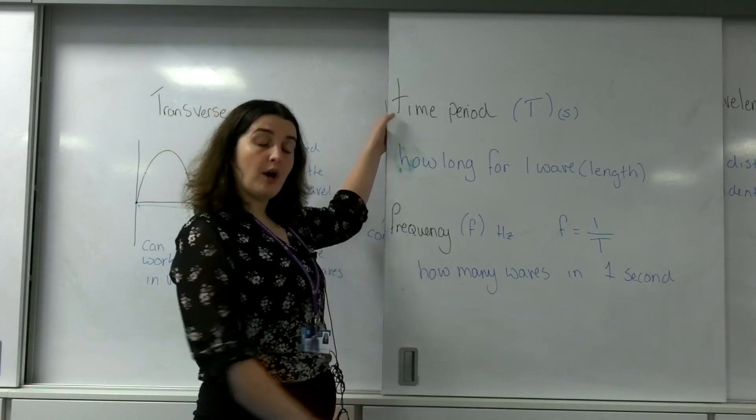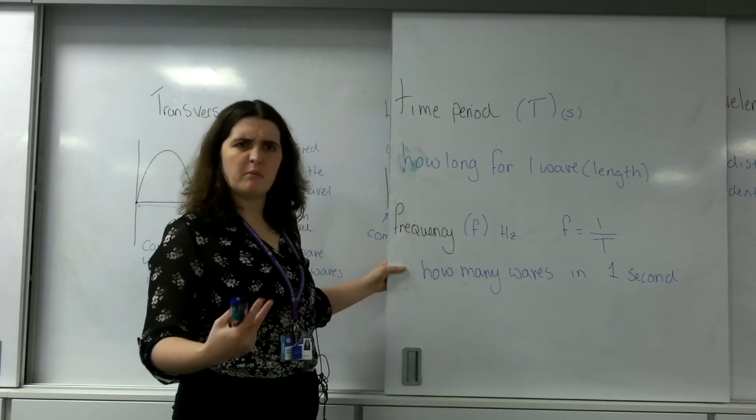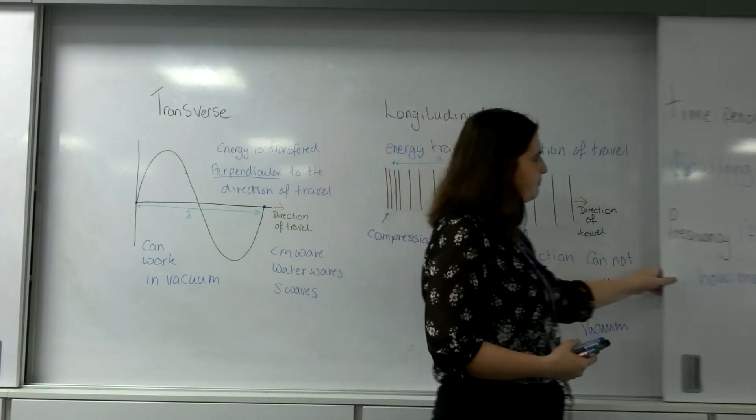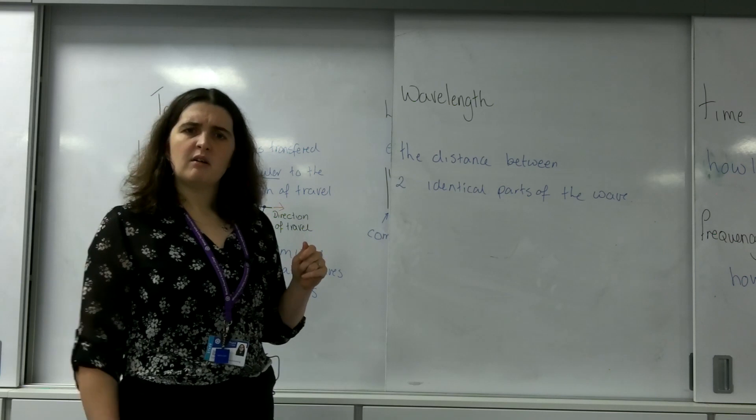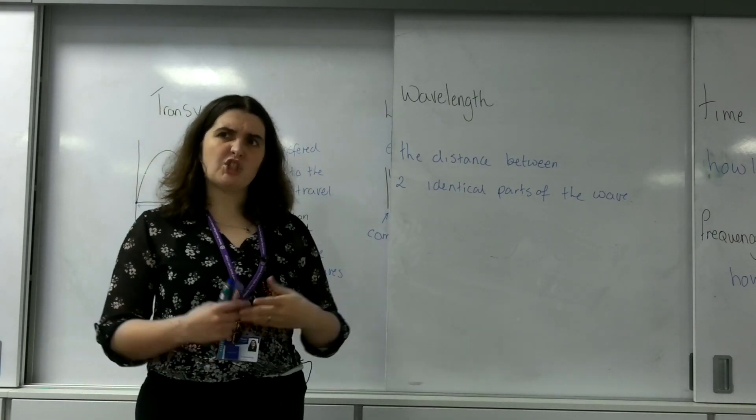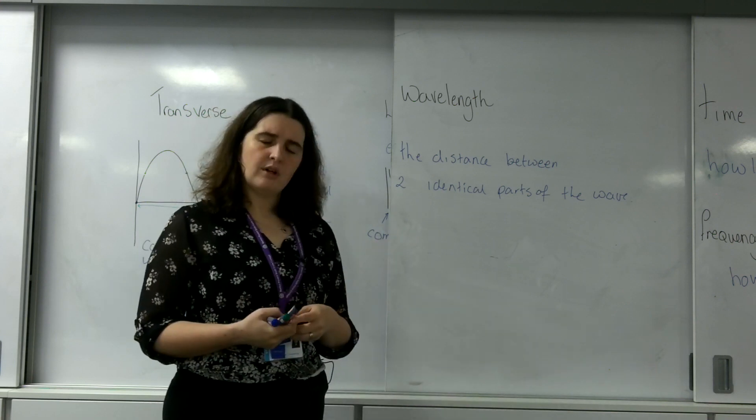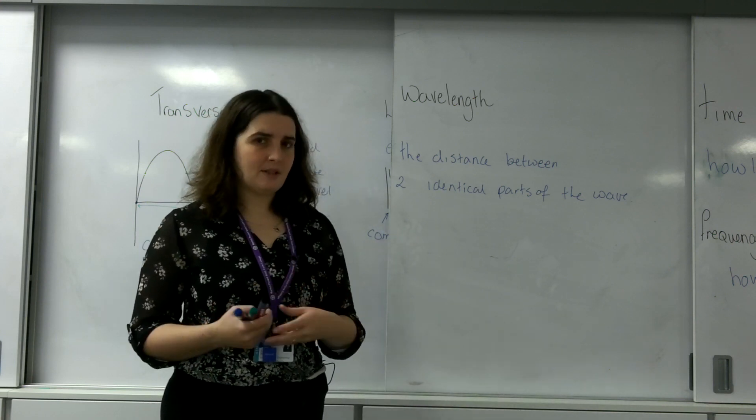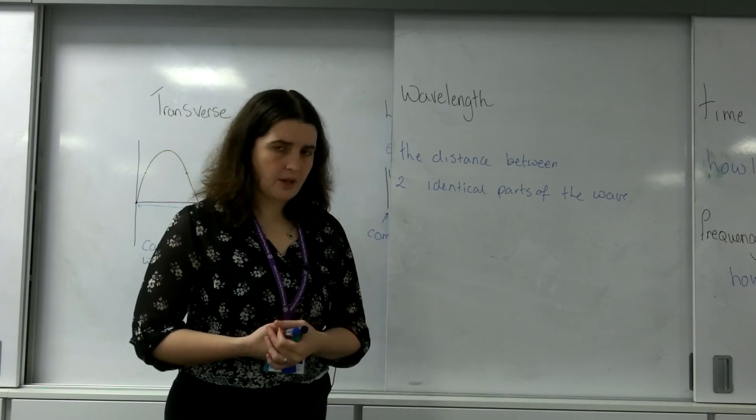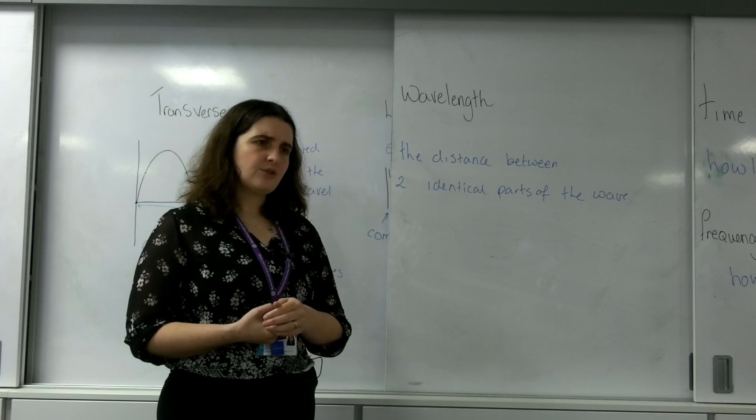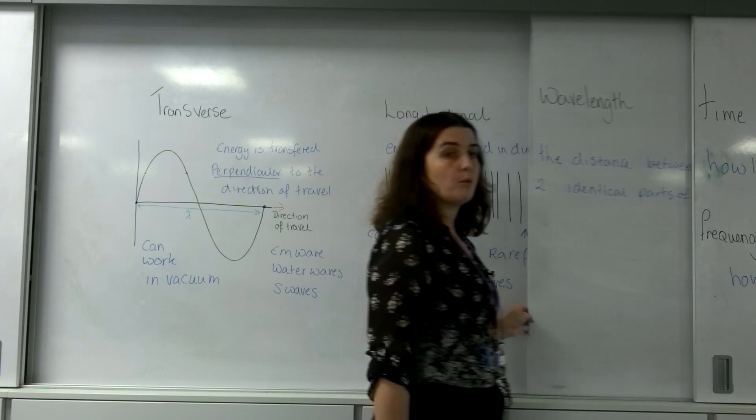We have the time period and the frequency defining something about the time of a wave. We have the wavelength defining how much distance the wave has gone. We can relate these two and look at the speed. Speed is defined as distance over time, and we are going to use these concepts to be able to calculate the speed of a wave.